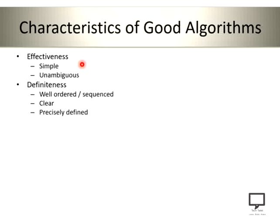The second characteristic is definiteness. We are supposed to check whether all the steps mentioned in the algorithm are well-ordered or well-sequenced. Because if the set of instructions are not following the correct sequence or correct order, then it will not give the correct results, and that's why it will not give definite results — and this is not considered a good algorithm. Under definiteness, we check whether all instructions mentioned in the algorithm are clear and precisely defined. They must be clear, they must be precisely defined, and they should not be vague.